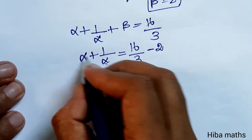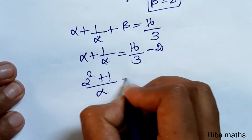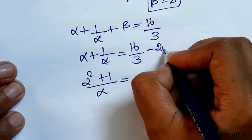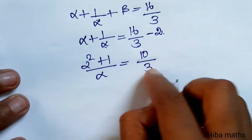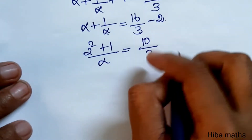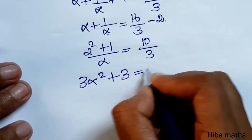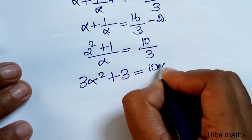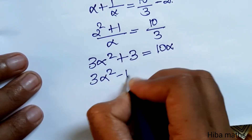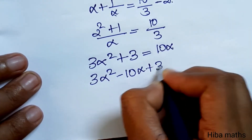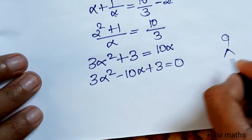So α + 1/α = (16 - 6)/3 = 10/3. Cross-multiplying: 3(α² + 1) = 10α, which gives the quadratic 3α² - 10α + 3 = 0.